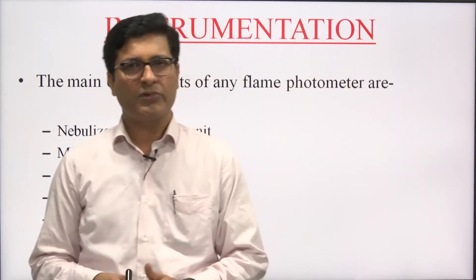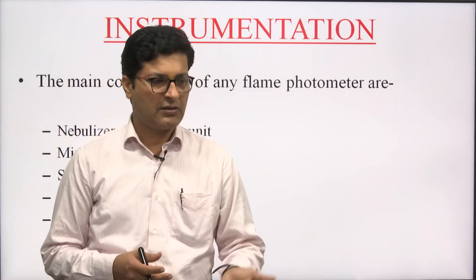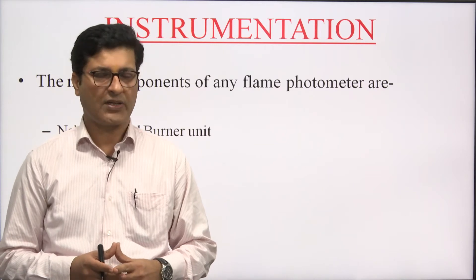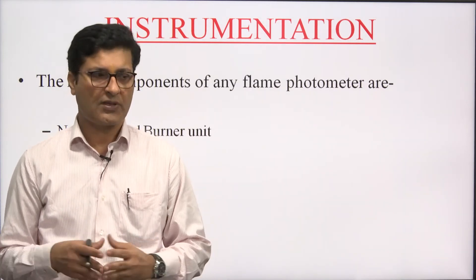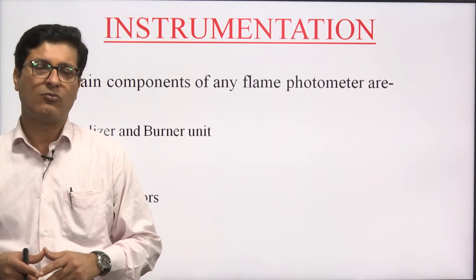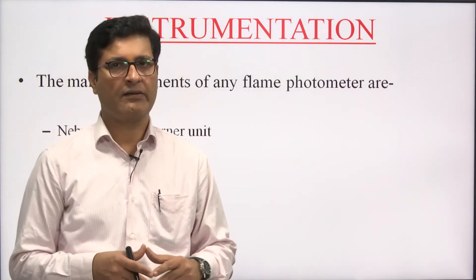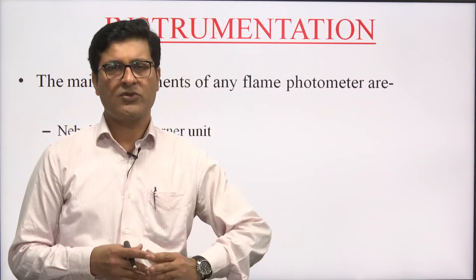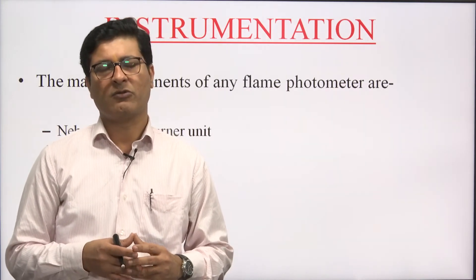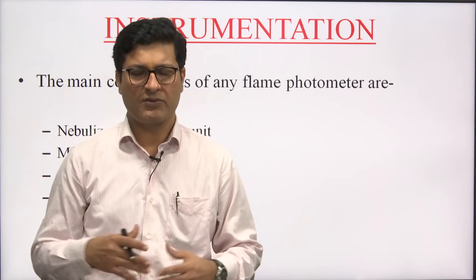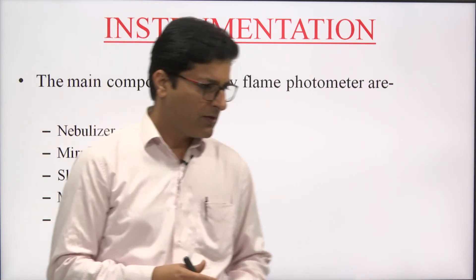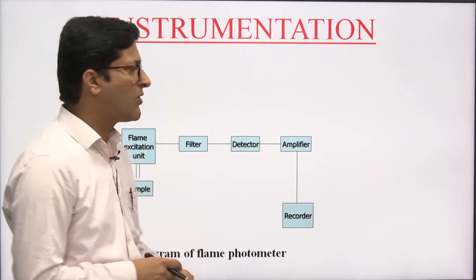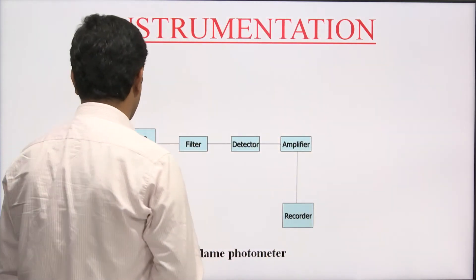The main components of any flame photometer include a nebulizer unit or burner unit, mirrors, slits, monochromators, and detectors. These are the prime or basic components of any flame photometer; apart from these, some smaller parts may also be present. Let us first discuss the general block diagram of a flame photometer.